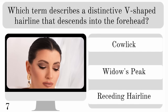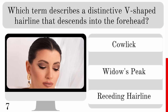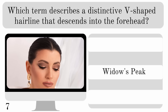Which term describes the distinctive V-shaped hairline that descends into the forehead? Is it a cowlick, widow's peak or receding hairline? And the answer is widow's peak.